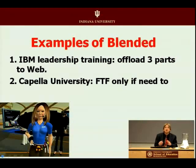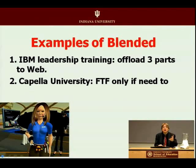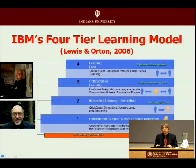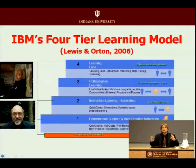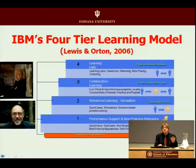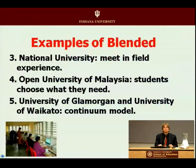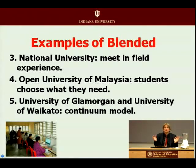At IBM, they've been able to offload three-fourths of their leadership training to the Internet and only do the last quarter face-to-face. IBM's four-tiered model has the first three parts relying on computer-based interaction or humans on the Internet giving feedback, and they only meet at the end of their training experience. At National University, their teacher training program has gone to a blended approach where they meet during field experiences and all their courses in some programs are on the Internet.